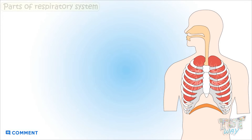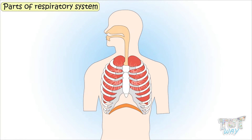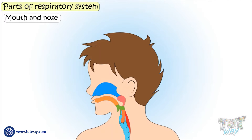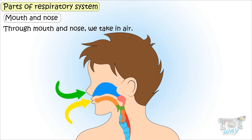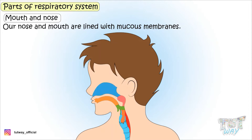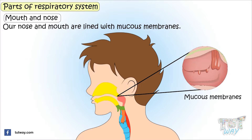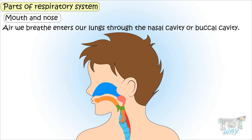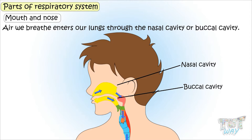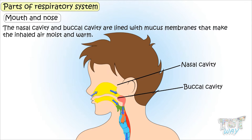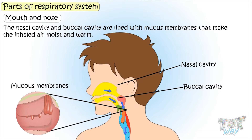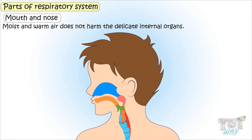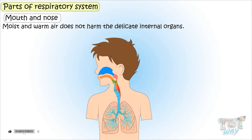Now let's learn the parts of the respiratory system. Through the mouth and nose we take in air. Our nose and mouth are lined with mucous membranes that keep them moist. Air we breathe enters our lungs through the nasal cavity or buccal cavity. Both cavities are lined with mucous membranes that make the inhaled air moist and warm. Warm and moist air does not harm the delicate internal organs.